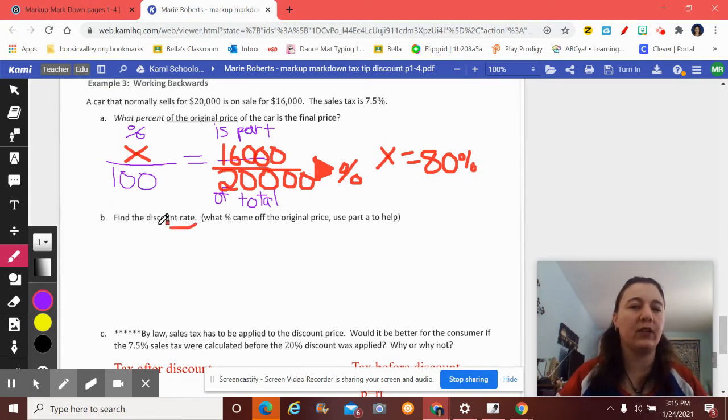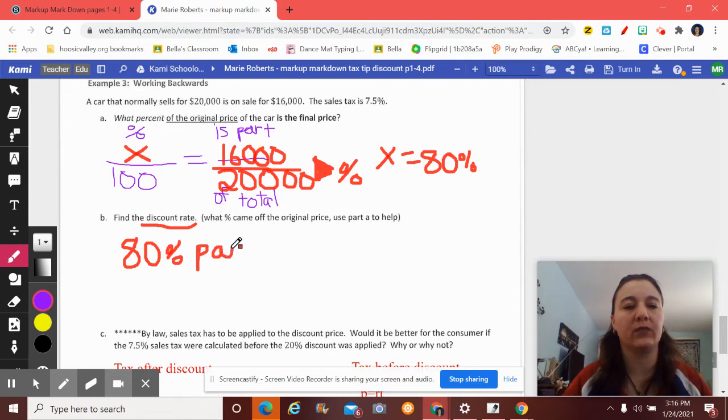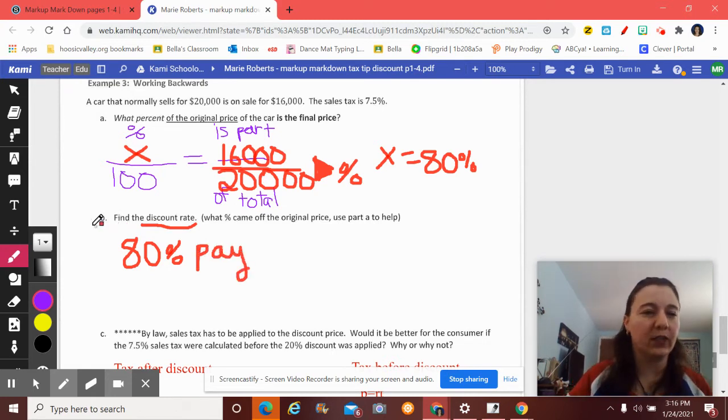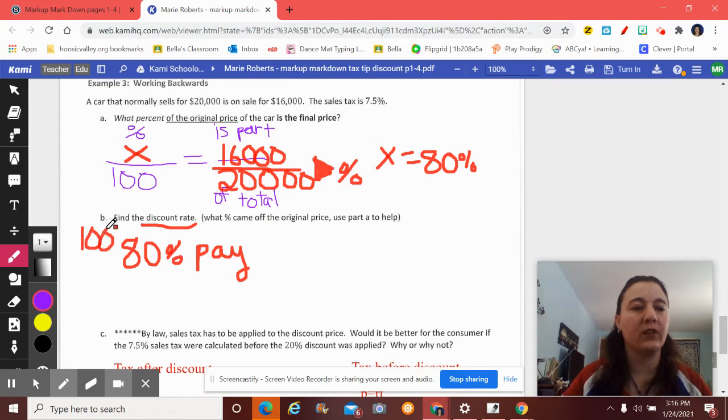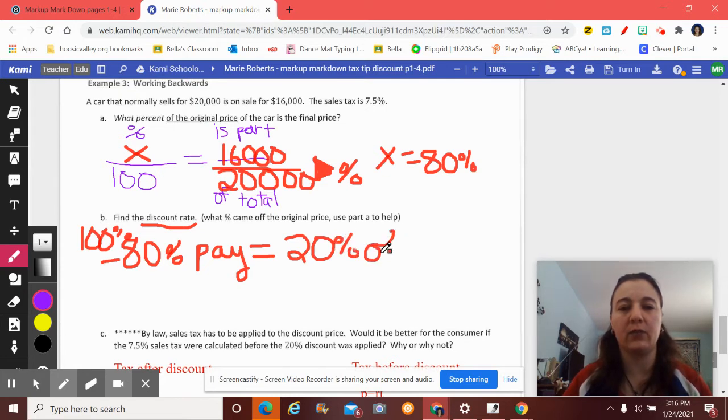What is the discount rate? This is a separate question. Oftentimes part B will be related to part A. In part A, I found that 80% is the percent that I'm going to pay compared to the original price. What percent do I always start at? Like your grade always starts at? The price always starts at? That number is 100. Well, if I started with 100% and I take away what I pay, I'm left with what I don't pay, which is the amount that I'm discounted. That just gave me 20% off.